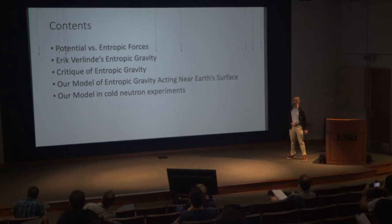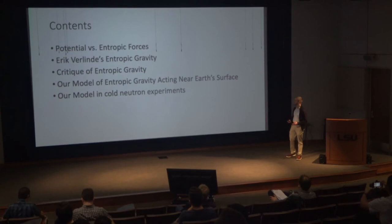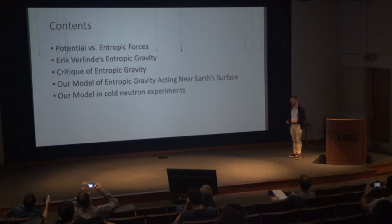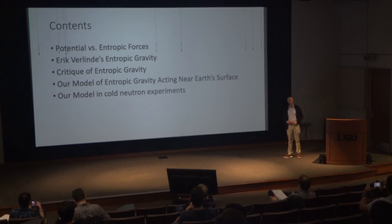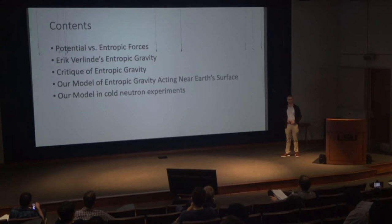First, I'd like to distinguish between potential and entropic forces in general. I'd like to discuss Eric Verlinde's motivating arguments for entropic gravity, bring up a very strong critique of entropic gravity that we then address by modeling entropic gravity near Earth's surface in the context of open quantum systems, and then compare our results to those of ultra-cold neutron experiments.